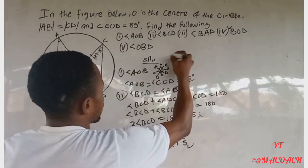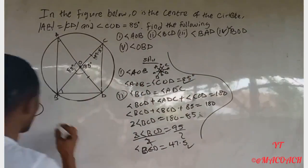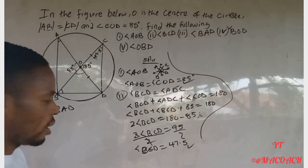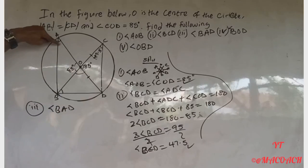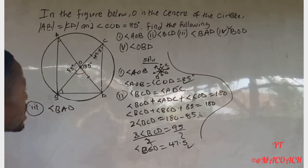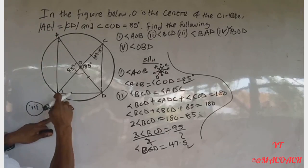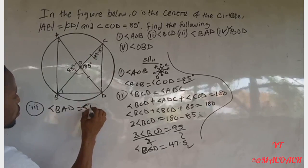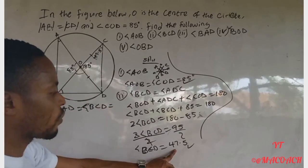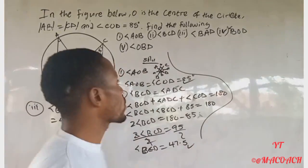For question three, we want to find angle BAD. We are looking for angle A here. If you remember cyclic geometry, angles in the same segment are equal. So angle BAD equals angle BCD. Therefore angle BAD equals 47.5°. Question three is done.